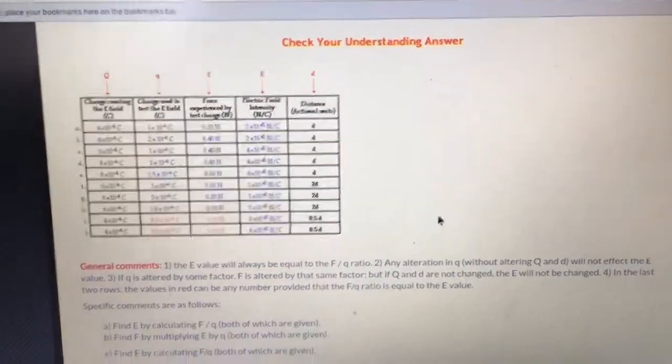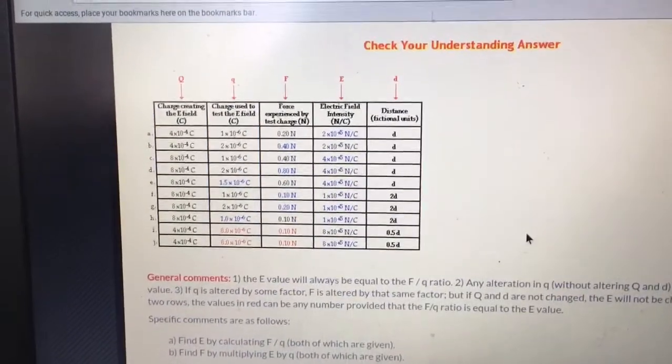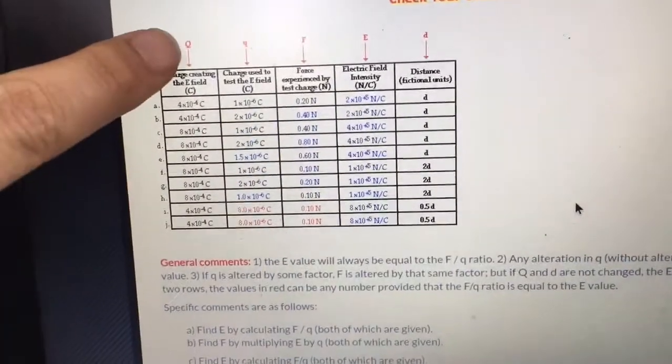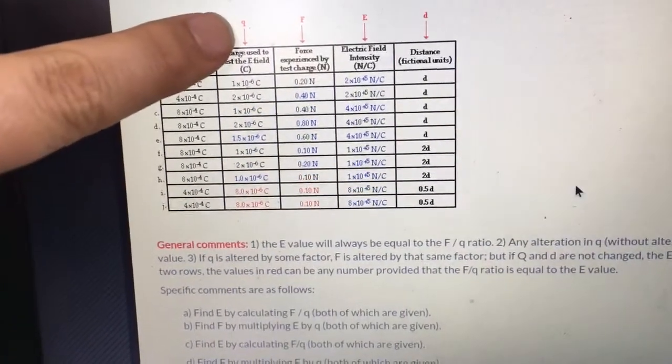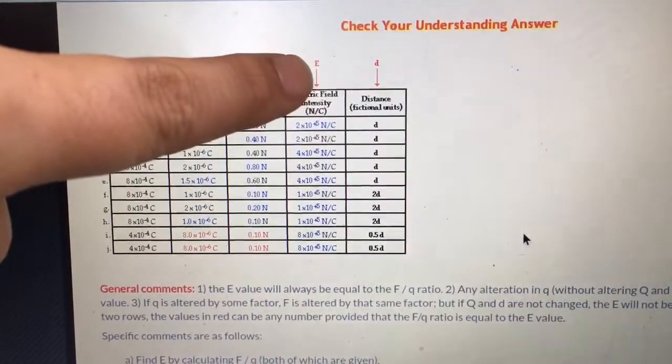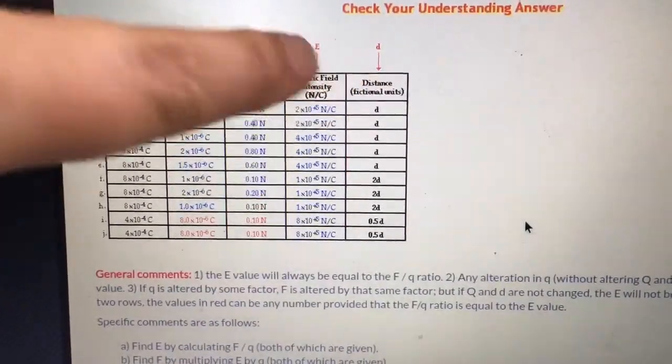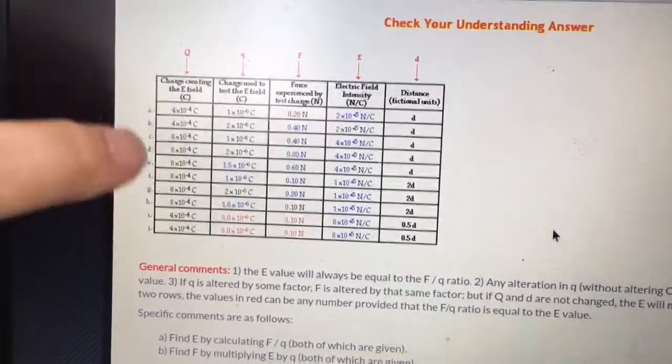Alright, so here's the answers for the electrostatic table. We've got big Q, which is the charge creating the electric field; little q, which is the test charge; F, which is the force; E, which is the electric field intensity; and then D, which is the distance.